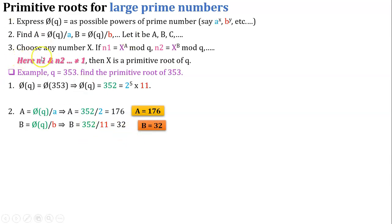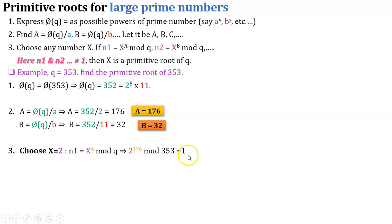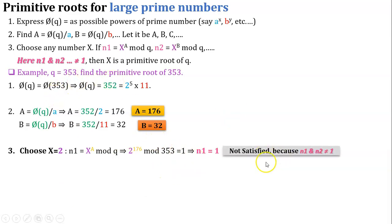As per step 3, choose any number x. Here x equals 2. The equation is n1 equals x raised to A mod q, so 2 raised to 176 mod 353. The answer is n1 equals 1. Our condition requires n1, n2, etc. not equal to 1, so this condition is not satisfied. No need to find n2 for x equals 2.